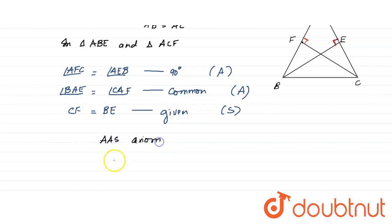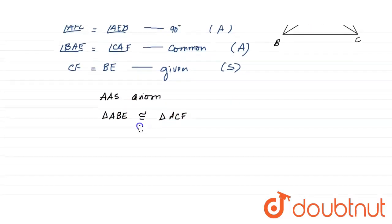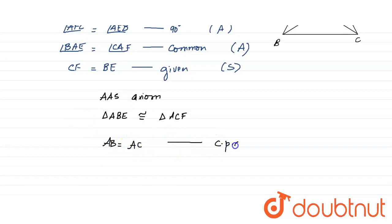From the AAS axiom — Angle-Angle-Side — we can say that triangle ABE is congruent to triangle ACF.